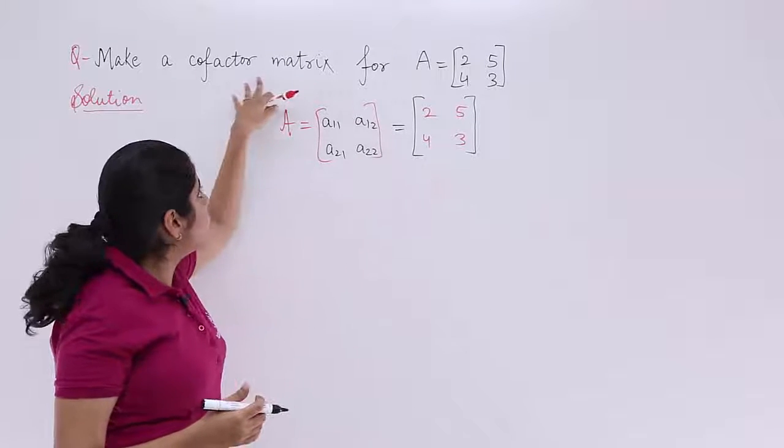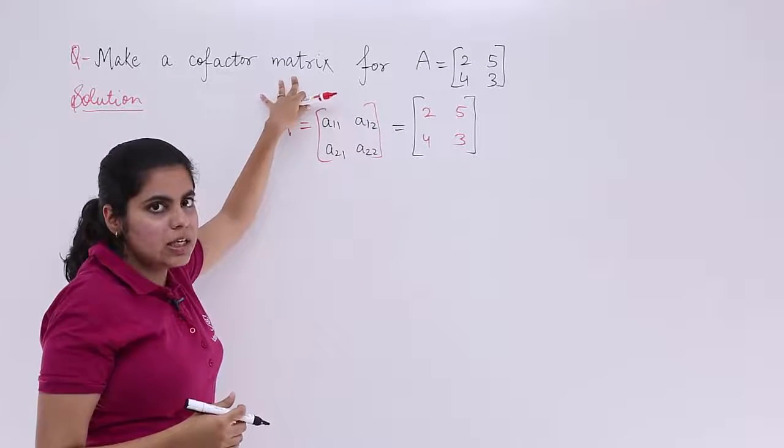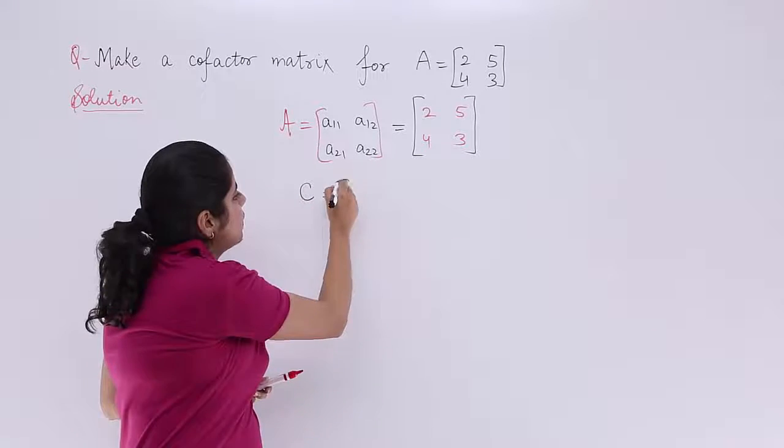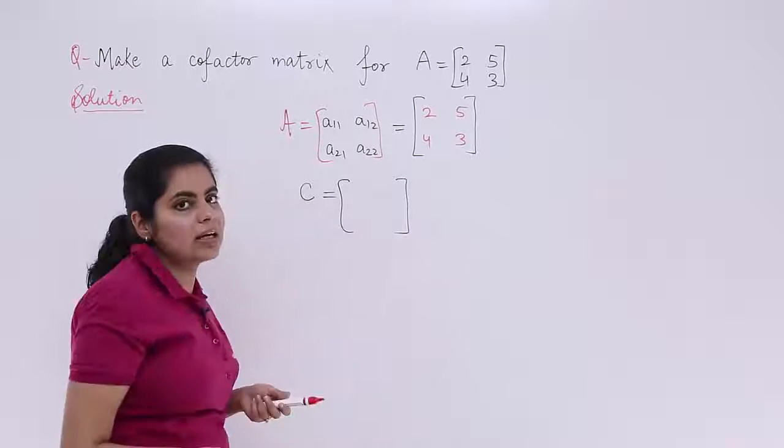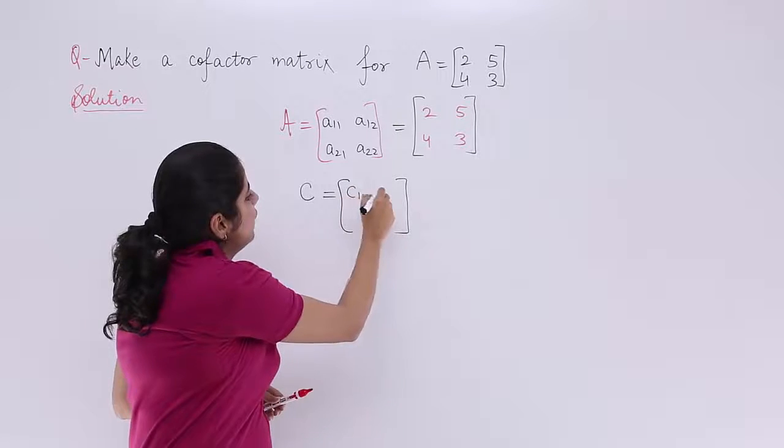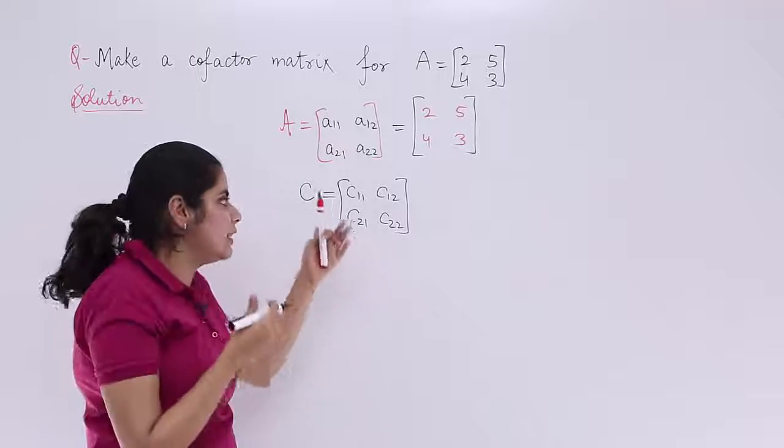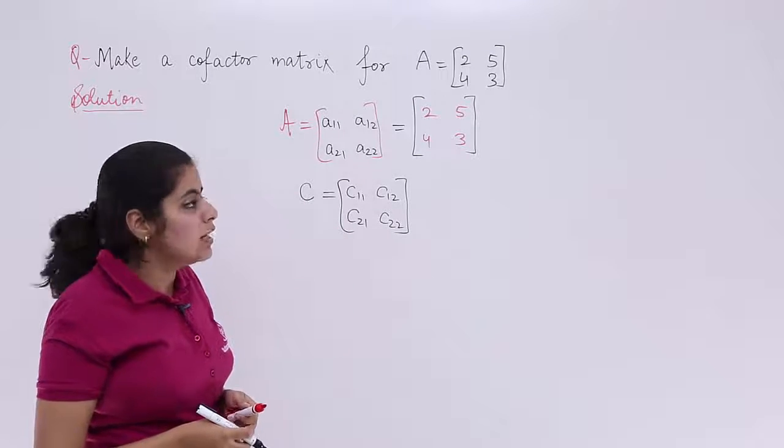Now, since a cofactor matrix is needed, it would be something called as C. And that cofactor matrix will have all the cofactors in it. So it is C11, C12, C21, C22. That will be there in this matrix and that we need to compute.